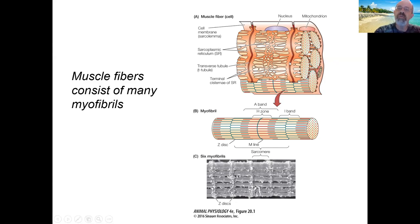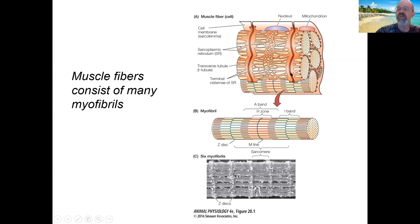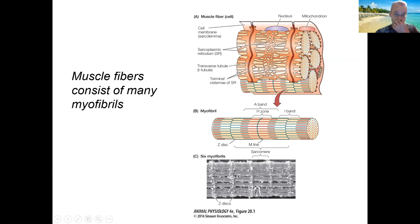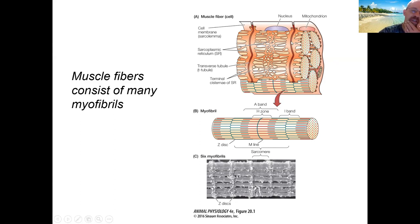We also have structures known as T-tubules or transverse tubules. These are essentially invaginations of the cell membrane that go into the interior of the cell. A muscle cell is a very large cell, and when it's stimulated to contract, if you don't have a way of getting the stimulus into the interior, only the surface will contract. The T-tubules carry the signal — an electrical signal from the nerve — into the interior so the entire muscle contracts.